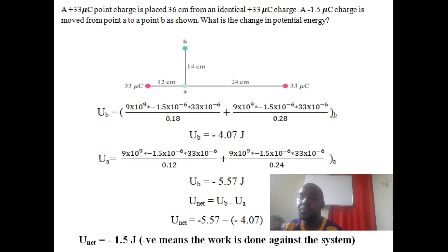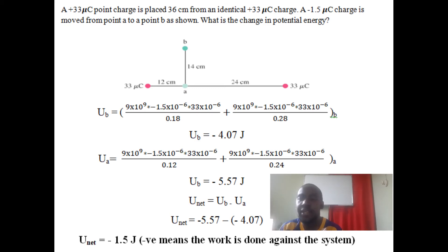The potential energy at A is negative 4.07 joules. The net change in potential energy is B minus A: negative 5.57 minus negative 4.07 equals negative 1.5 joules. The negative answer tells us work is done against the system — the charge moves against the electric field.